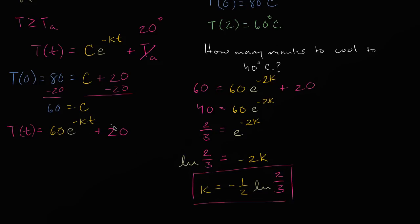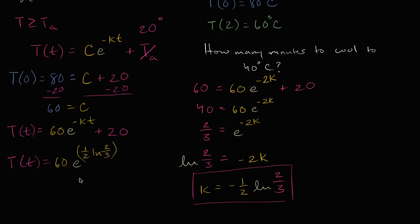We can now rewrite the full model. T(t) = 60 e to the power of one-half times the natural log of two-thirds, times t, plus 20. Note that the natural log of two-thirds is negative since two-thirds is less than one, so the temperature decreases over time as expected.